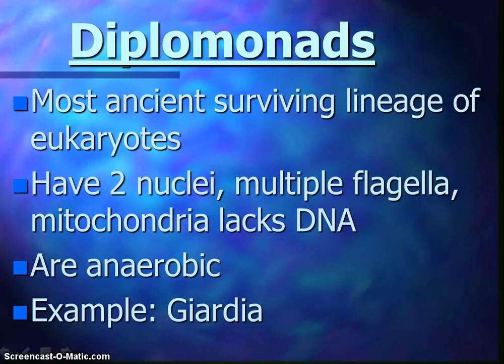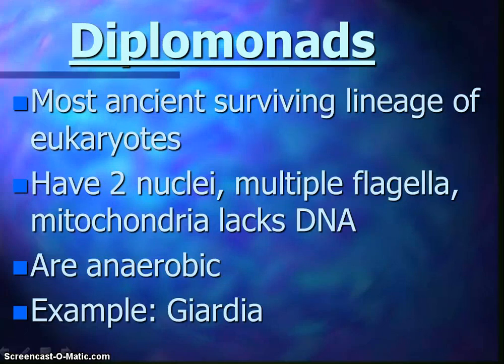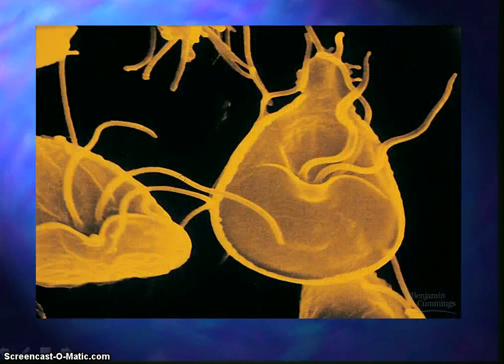Diplomonads are the ancient surviving lineage of eukaryotes — this is the connection with the bacteria. They have two nucleuses, multiple flagella, and their mitochondria lack their own DNA. They are anaerobic, and our example is Giardia, and that's what it would look like.